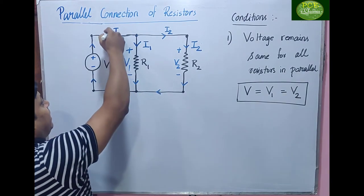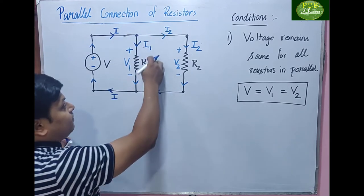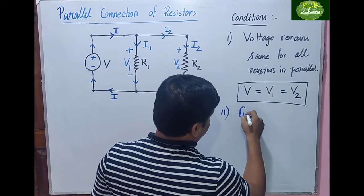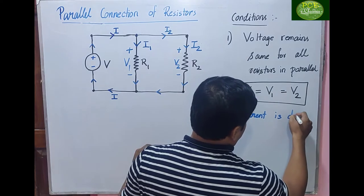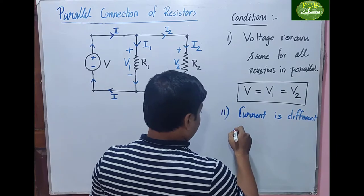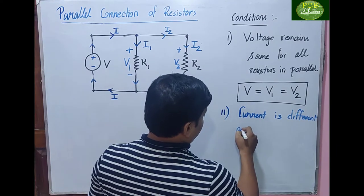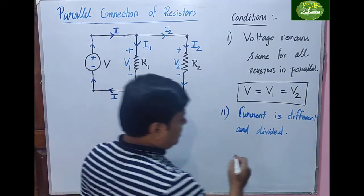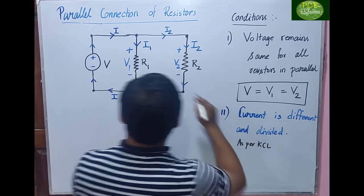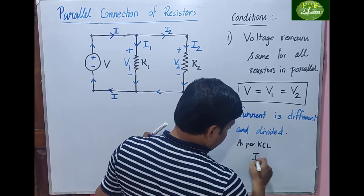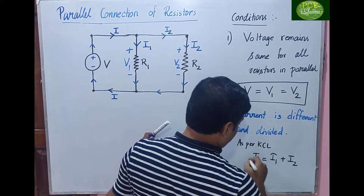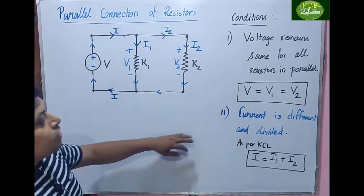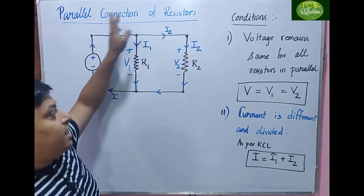The second condition: when current enters this node, it is divided. The current flowing through R1 and the current flowing through R2 are both different. Current is different and divided. As per KCL at this node, I = I1 + I2. These are the two conditions we have to take care of while solving problems for parallel connections.